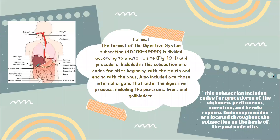Let's talk about the format of the digestive system. Your CPT code range is 40490 to 49999. It's divided according to anatomic site, and you can see figure 19.1 here, which is from your textbook.